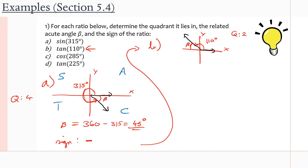Now we want to find the related acute angle. We can simply do 180 — which is going all the way to the negative x-axis — minus 110, which gives us the difference, which is beta. Beta is going to be 180 minus 110, which is 70 degrees. And finally, we use the CAST rule to find out what sign our ratio has. We spell CAST starting at the fourth quadrant going counterclockwise. In the second quadrant, only sine is positive. Since we're working with tan, the sign of our ratio is going to be negative, just like in A.